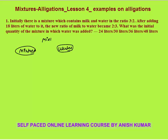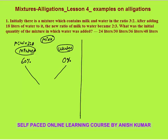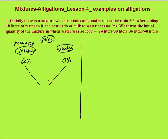I am applying milk allegation first. The mixture contains milk and water initially in the ratio 3 is to 2. So how much milk is there in the mixture? Milk is to water ratio is 3 is to 2, so milk will be 3 by 5, that is 60 percent. How much milk is there in the water? Zero, because water contains no milk. The overall average concentration — we can see that the average percentage of milk in the new mixture is 2 is to 3.